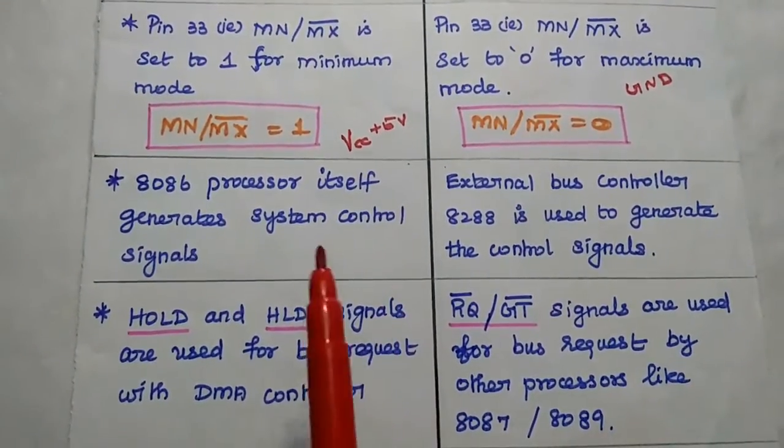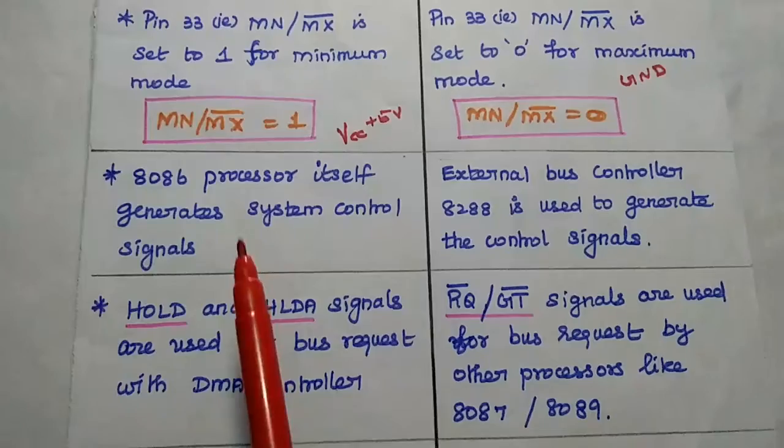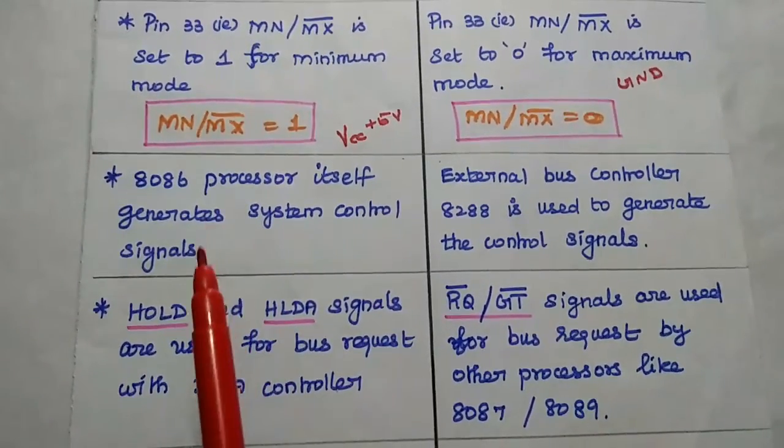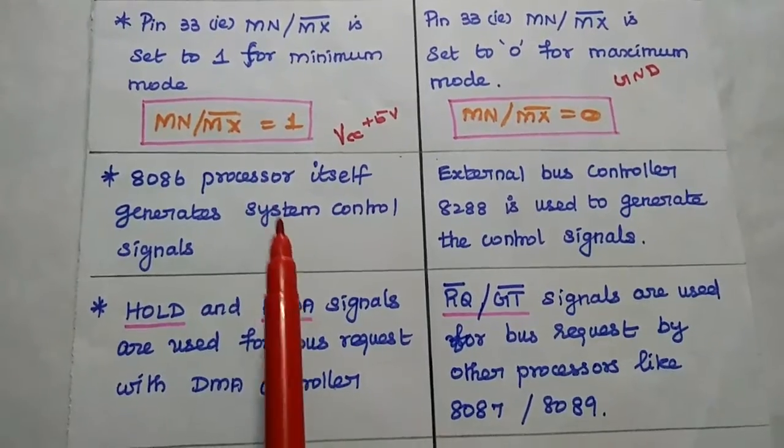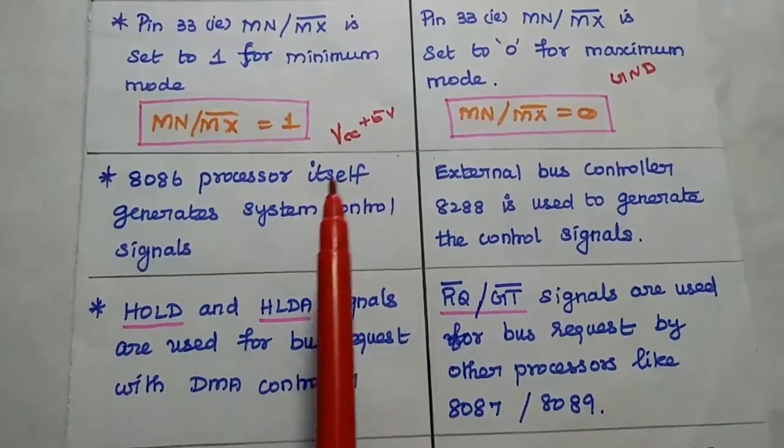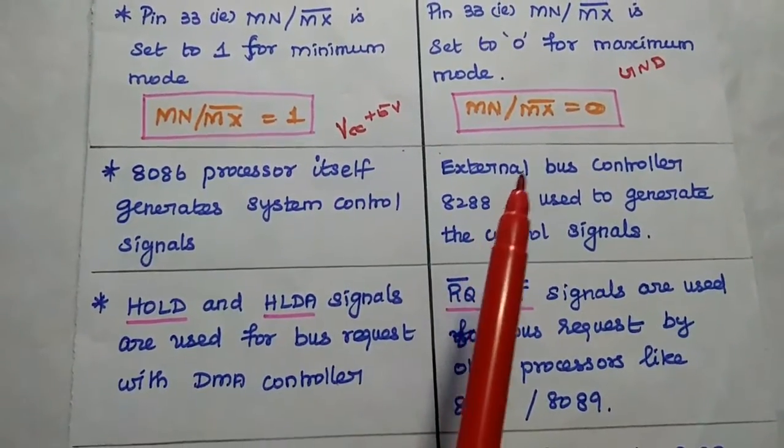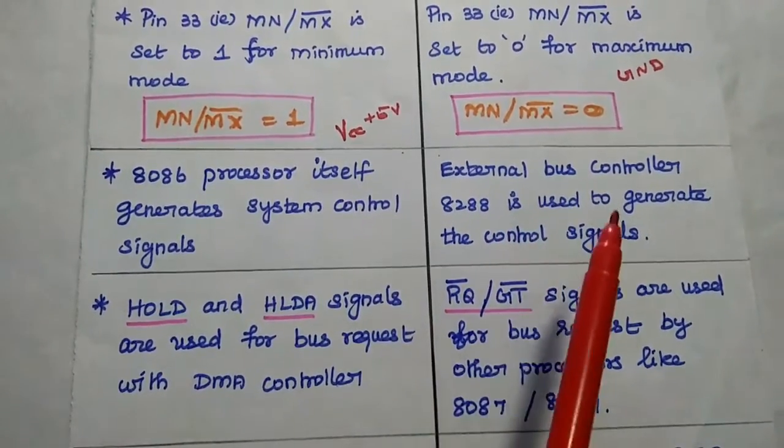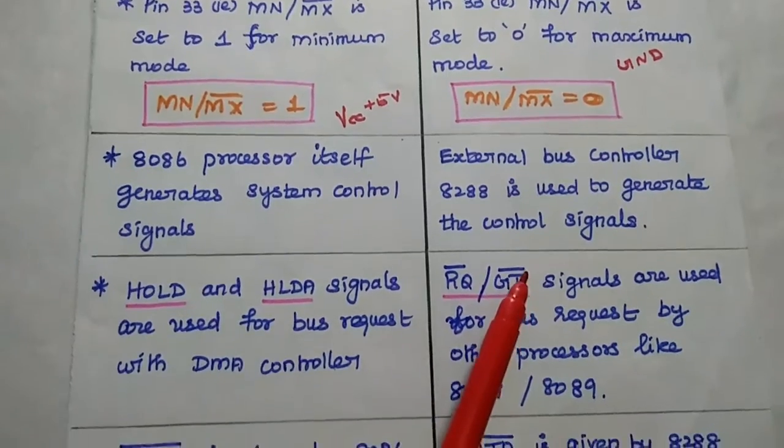8086 processor itself generates system control signals because it is having only one processor, that is 8086 processor. In maximum mode, external bus controller 8288 is used to generate the control signals.